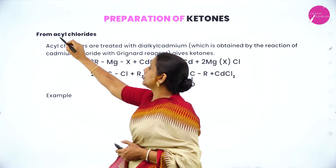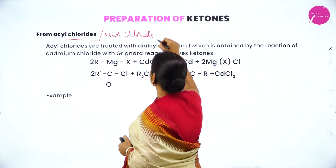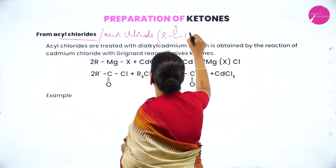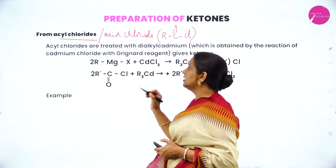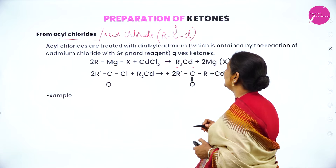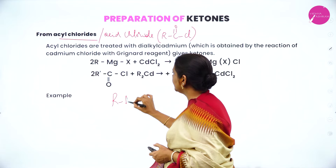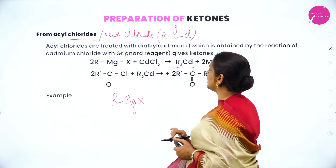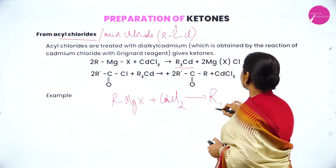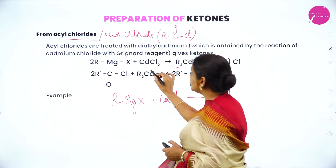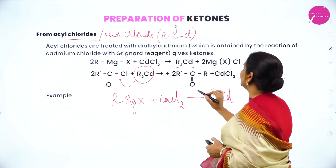Ketone is prepared from acyl chloride, also called acid chloride. The general formula of acid chloride is RC double bond O, Cl. First, we have to prepare dialkyl cadmium. Dialkyl cadmium is prepared by treating Grignard reagent — formula RMgX — with cadmium chloride, which gives rise to dialkyl cadmium.